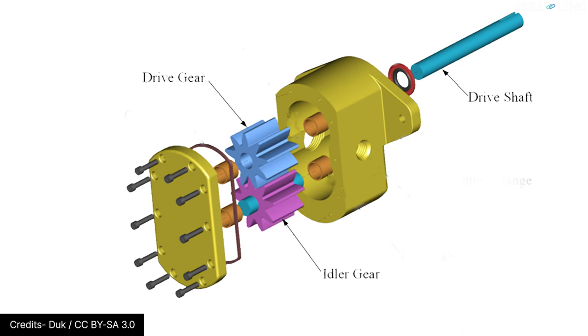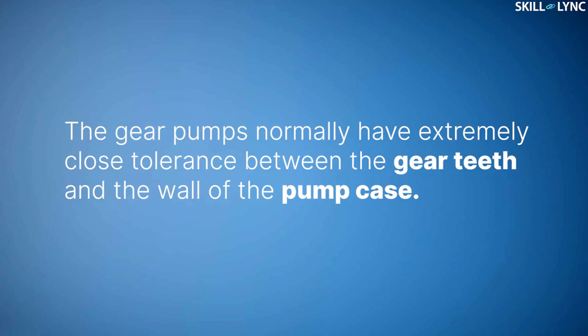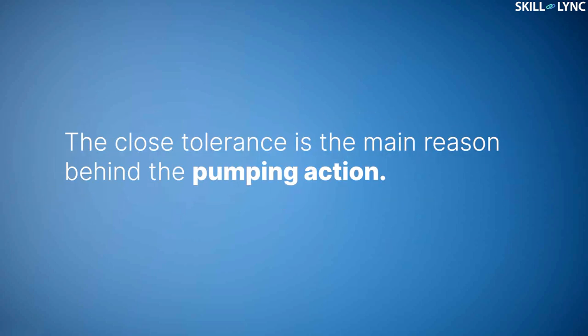The other gear acts as an idle gear and rotates with the help of the meshing action from the driver gear. The gear pumps normally have extremely close tolerance between the gear teeth and the wall of the pump case. The close tolerance is the main reason behind the pumping action.